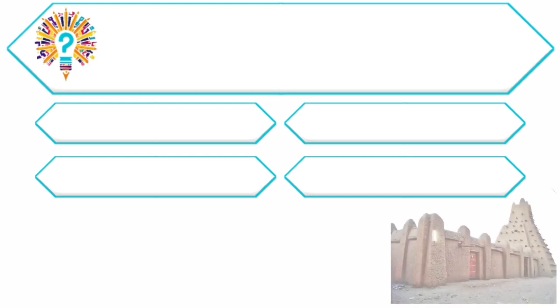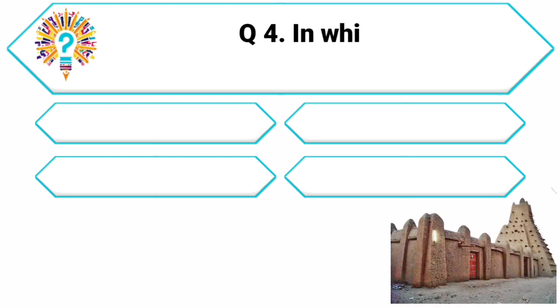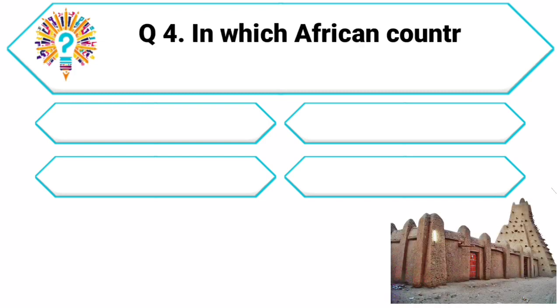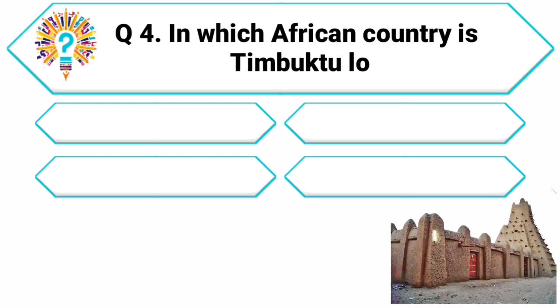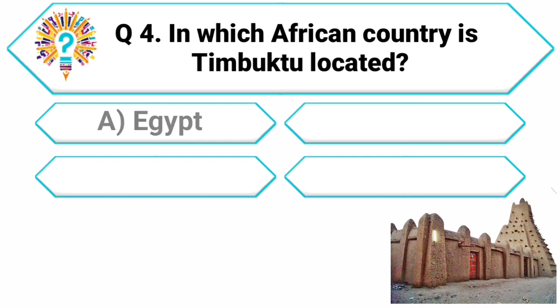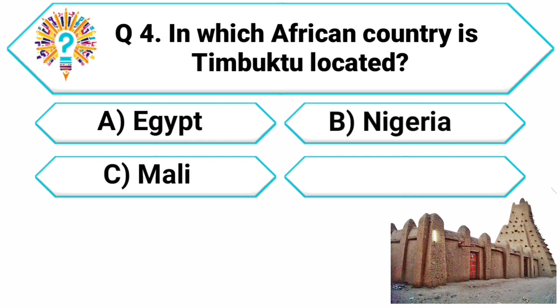Question 4. Our next wonder is the mystical city of Timbuktu. In which African country is Timbuktu located? Your options are: A. Egypt, B. Nigeria, C. Mali, D. Kenya.